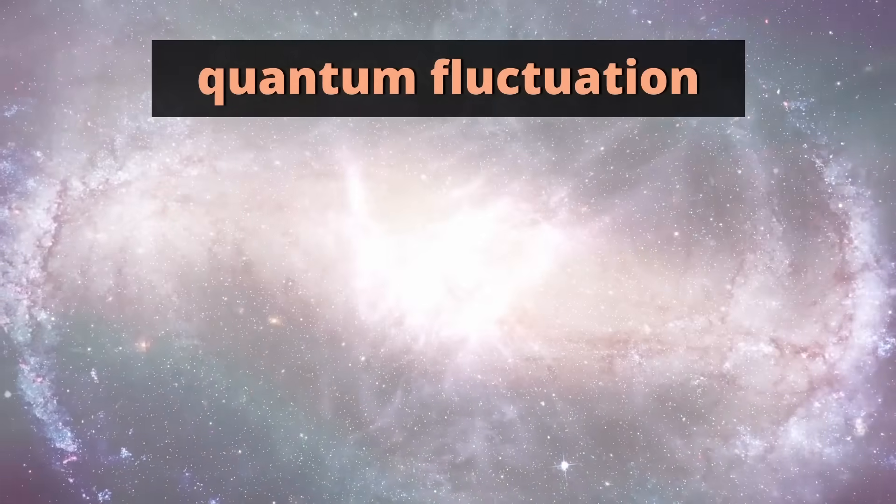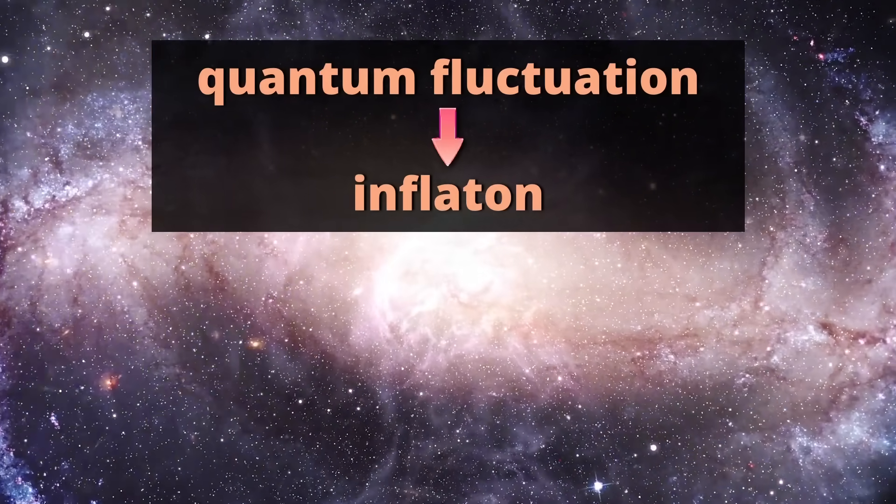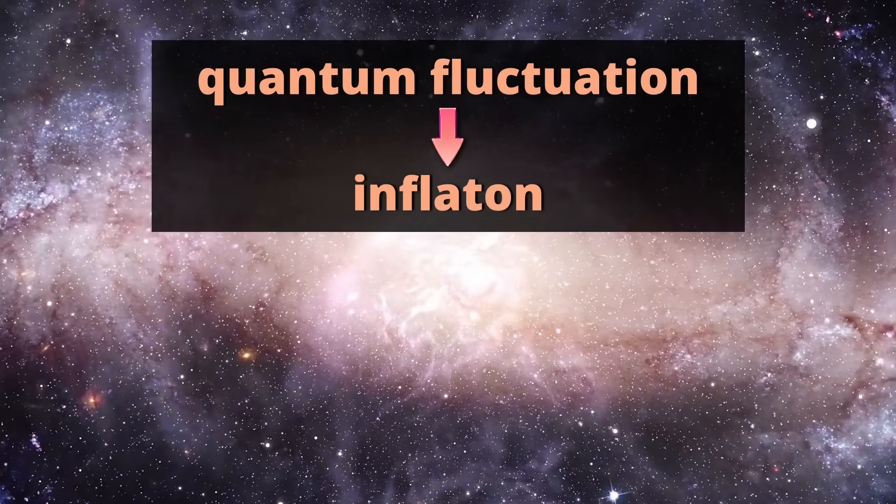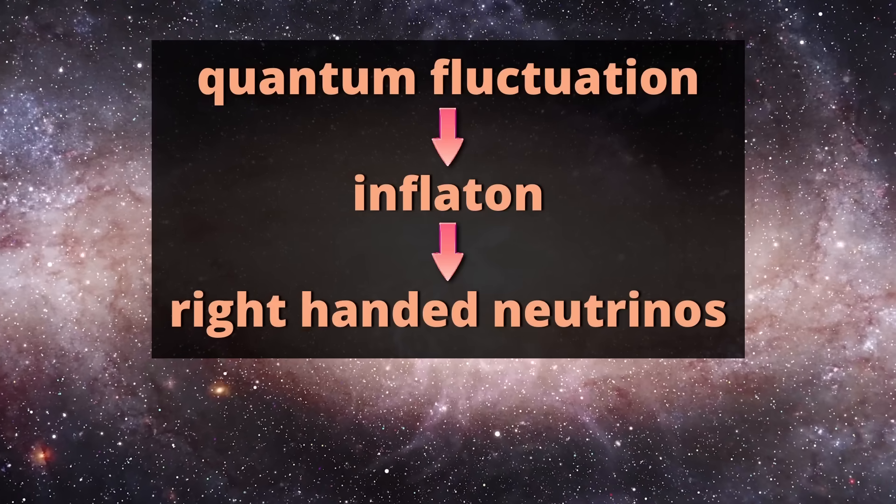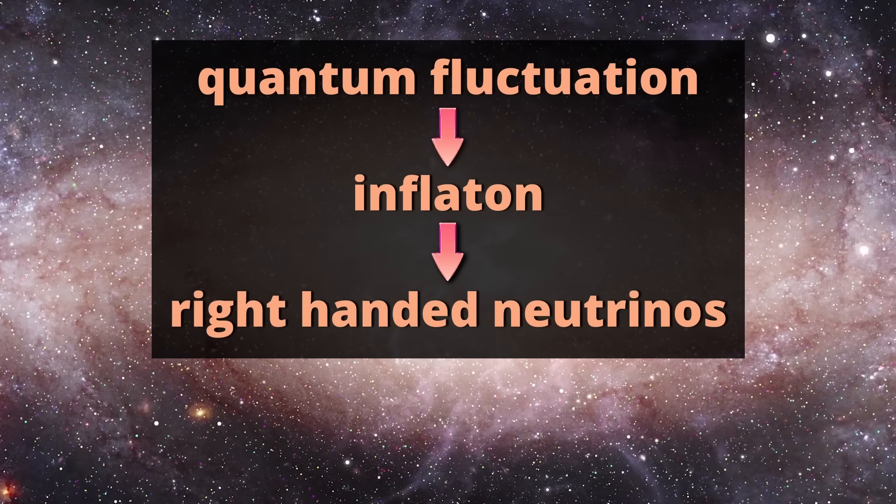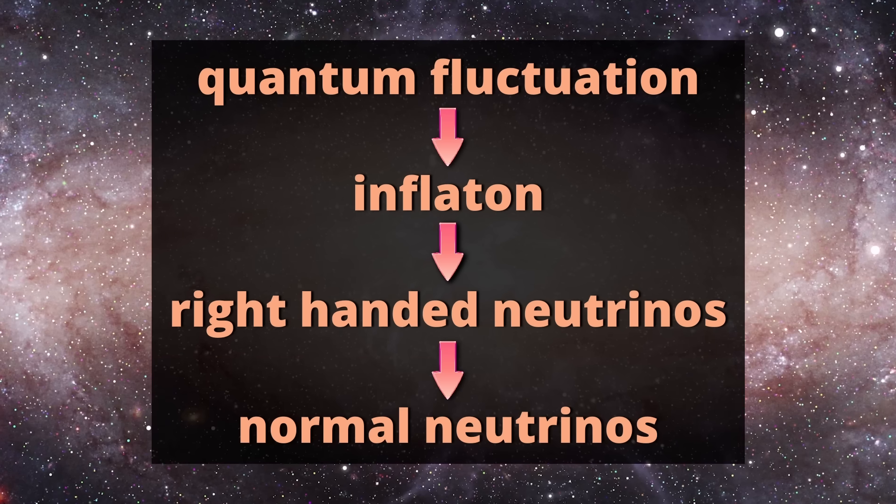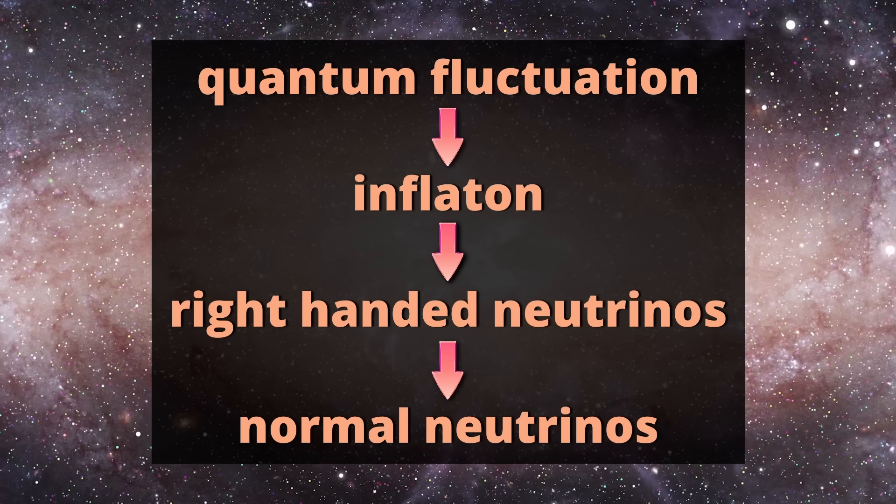The currently most popular theory for matter and antimatter creation goes like this. Brace yourself. The universe was created from a quantum fluctuation of a field called the inflaton. There's no evidence for such a quantum fluctuation or such a field. This inflaton field then decays into a lot of other particles, including right-handed neutrinos. There's zero evidence that these right-handed neutrinos ever existed. And those right-handed neutrinos then further decay into matter and antimatter, which then needs the CP violation.